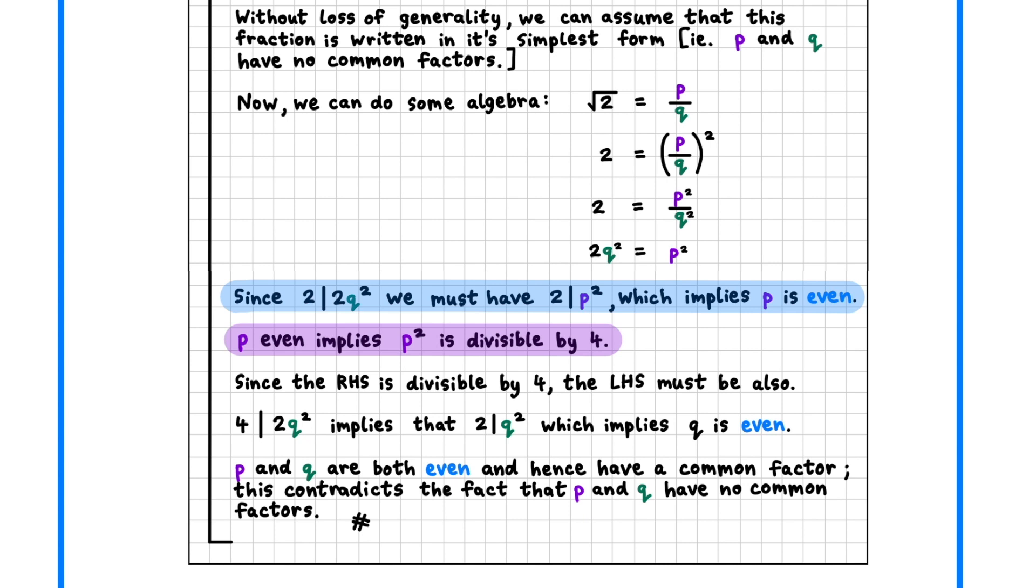If p is even, then the right hand side, p squared, will be divisible by 4. This means that the left hand side, 2q squared, will also be divisible by 4. This implies that q is even.